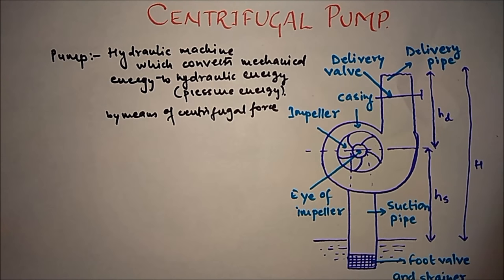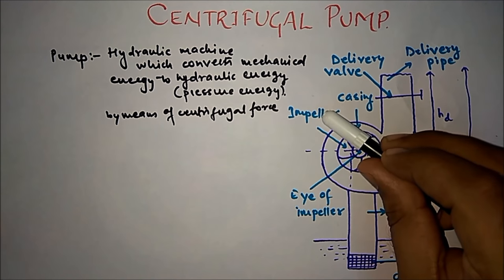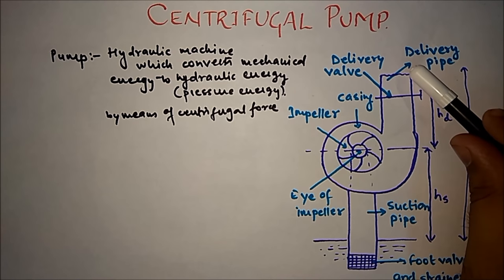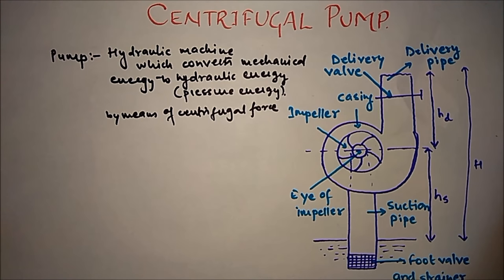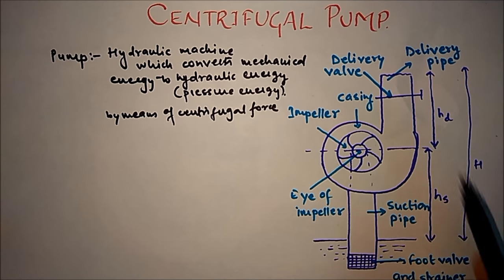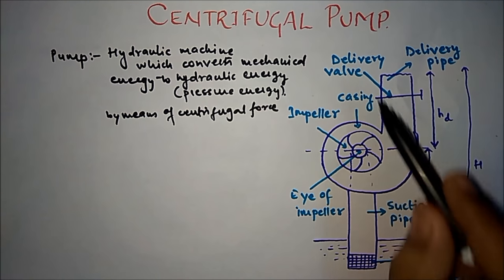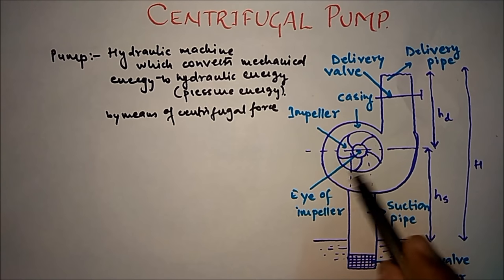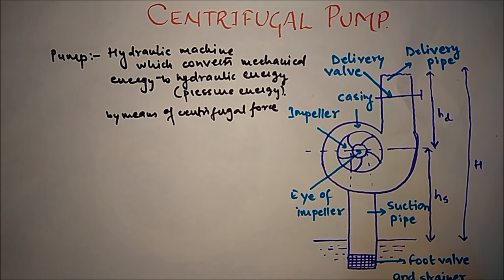Here you can see the construction of a centrifugal pump. The main parts are: casing, impeller, suction pipe, and delivery pipe. We also have a foot valve and strainer at the bottom, a delivery valve, and this is the eye of the impeller.